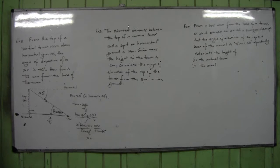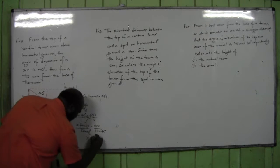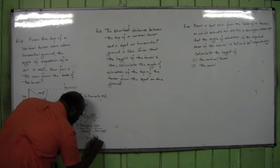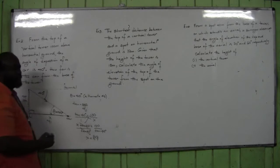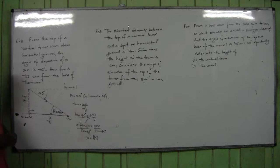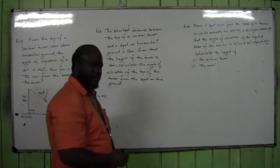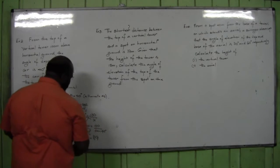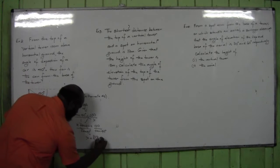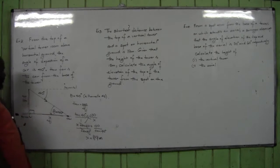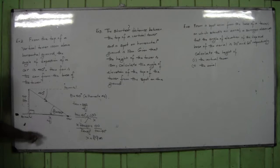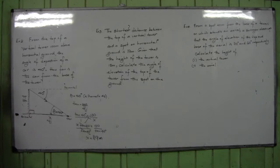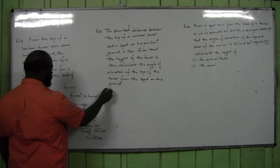Dividing both sides by tan(40°): x = 100 ÷ tan(40°). The answer is approximately 119.2 meters. So the car is approximately 119 meters from the base of the tower.